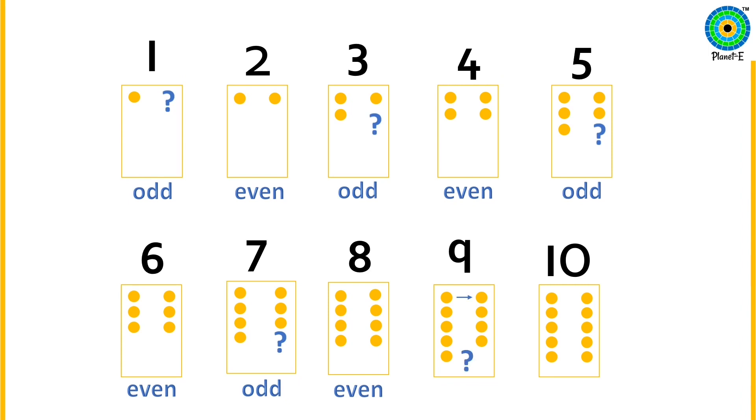Nine. If any number has a dot left alone without a friend or a companion, it is an odd number. Nine, it's an odd number.